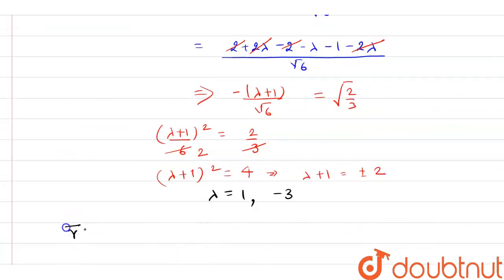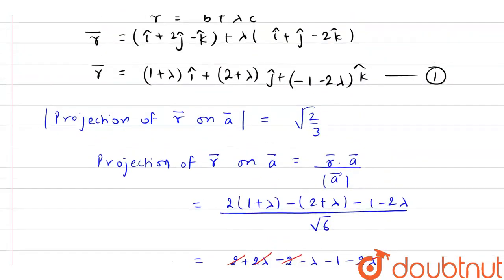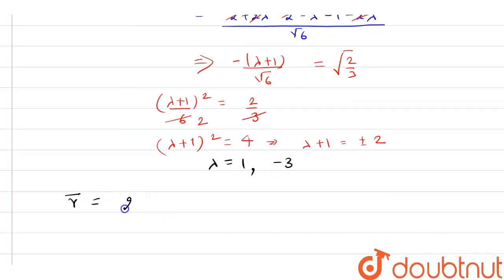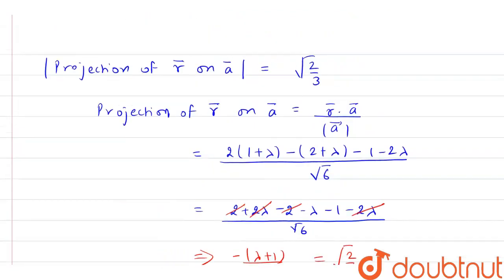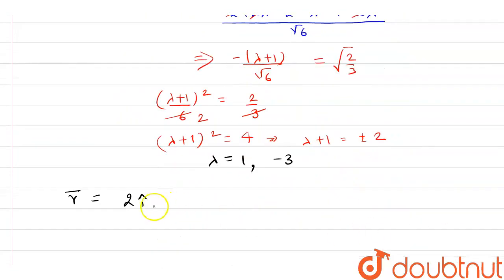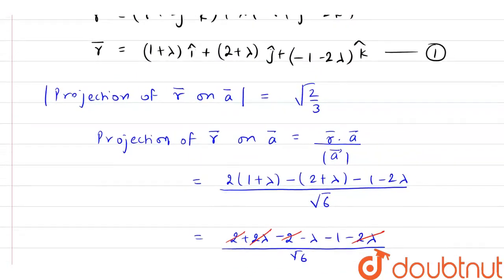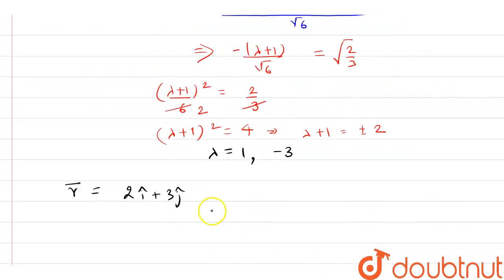Now from equation 1, I can say my vector r, if I put lambda equals to 1, this will become 2i cap plus 3j cap, and we have minus 3k cap. And we have another answer.